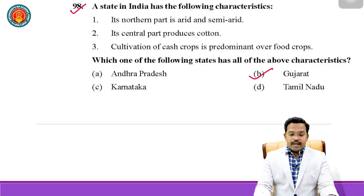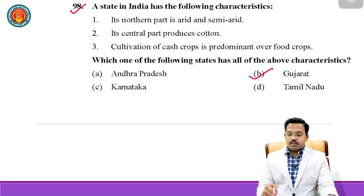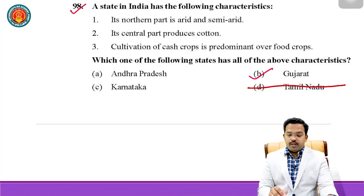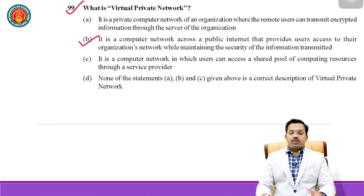Question 98: A state in India has the following characteristics — its northern part is semi-arid, its central part produces cotton, and cultivation of cash crops is predominant over food crops. Among options like Andhra, Karnataka, and Tamil Nadu, Tamil Nadu's northern part is not semi-arid. The state that matches all these characteristics is Gujarat, so the correct answer is Gujarat.